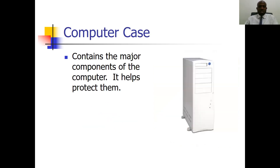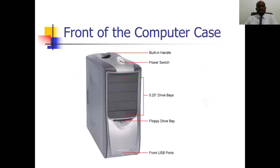The computer case is also called the system unit. It contains the major components of the computer and helps protect those components — the cables, hard drive, memory, and others. This is a typical example of a desktop case. You can see the built-in handle, the power button, the drive bay where you have the CD-ROM drive, the DVD drive, and the floppy disk drive, as well as the front USB port where you plug in your pen drive, keyboard, mouse, and the rest.